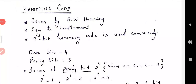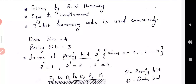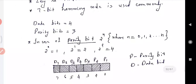Dear students, our next topic is the Hamming code, given by R.W. Hamming. It is easy to implement and we commonly use the 7-bit Hamming code. In case of a 7-bit Hamming code, it contains 4 data bits and 3 parity bits.